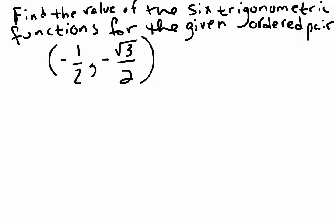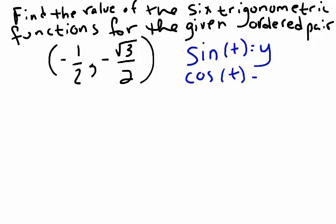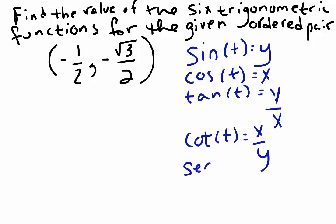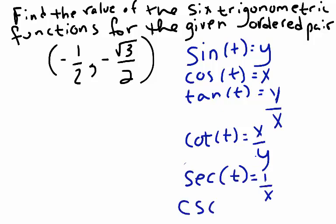If the radius has length 1, then we can say that sine of t equals y, cosine of t equals x, tangent of t equals y over x, cotangent of t equals x over y, secant of t equals 1 over x, and cosecant of t equals 1 over y.